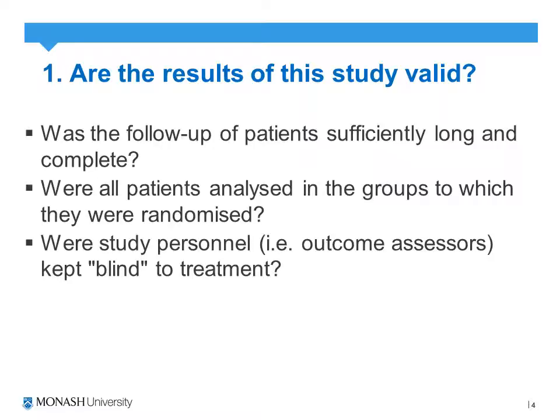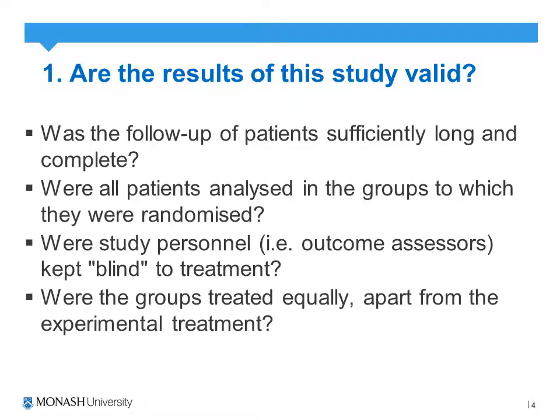The last type of bias we're looking at is detection bias, and that's why we ask whether study personnel — i.e. outcome assessors — were blind to the treatment. We're trying to minimise data manipulation from the investigator's perspective by blinding them, ensuring they don't know whether the patient they're assessing was allocated to the intervention or the control group.